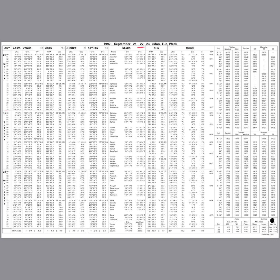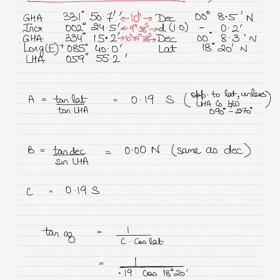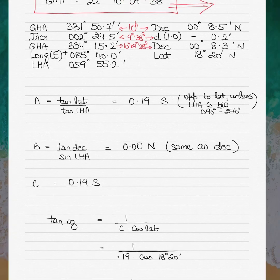Going into the nautical almanac for 22nd September at 10 hours, under the Sun column, we get the GHA and declination. The declination is 0 degrees 8.5 minutes North. The declination is decreasing to the next hour, so the d-correction will be subtracted. The d-value is 1. My increment time is 9 minutes and 38 seconds.